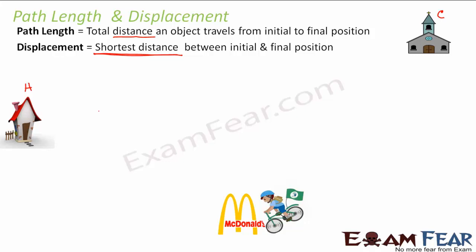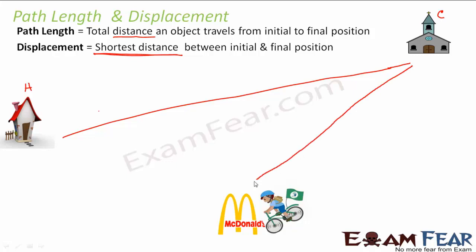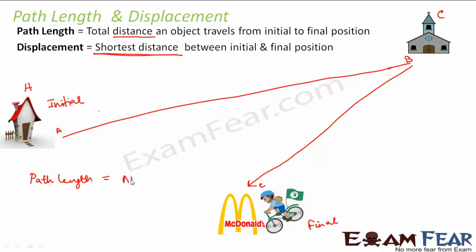What is the total distance covered by this boy? The path followed was first from home to church, then from church to McDonald's. Path length is the total length of the path — the total distance covered from initial position to final position. His initial position was home and his final position was McDonald's. So let us call these points A, B, and C. The total path length will be AB plus BC.